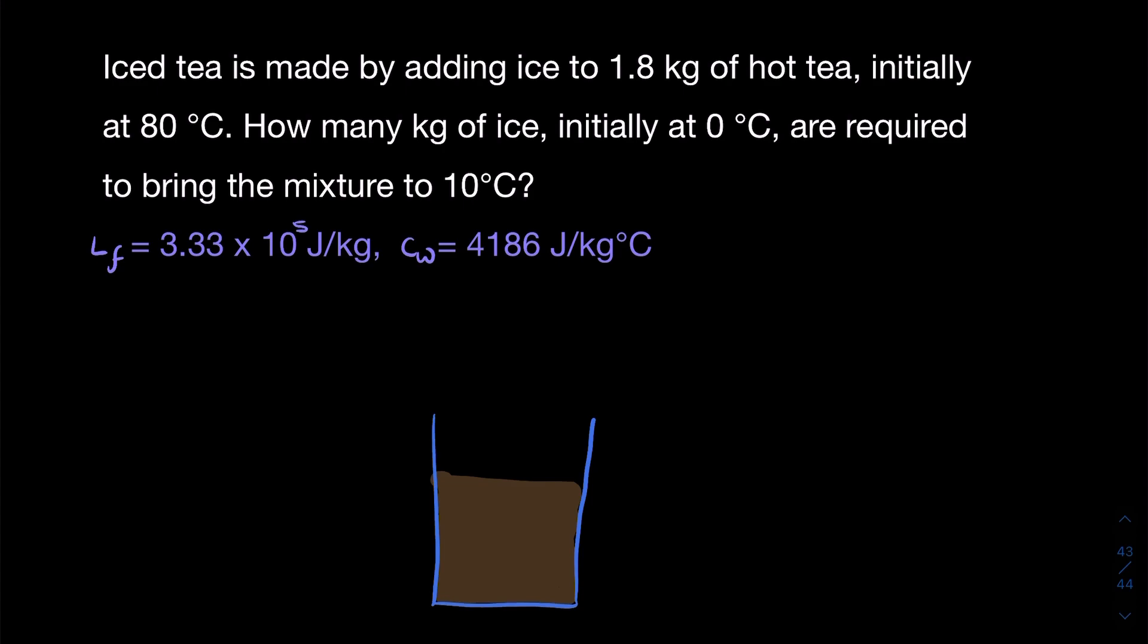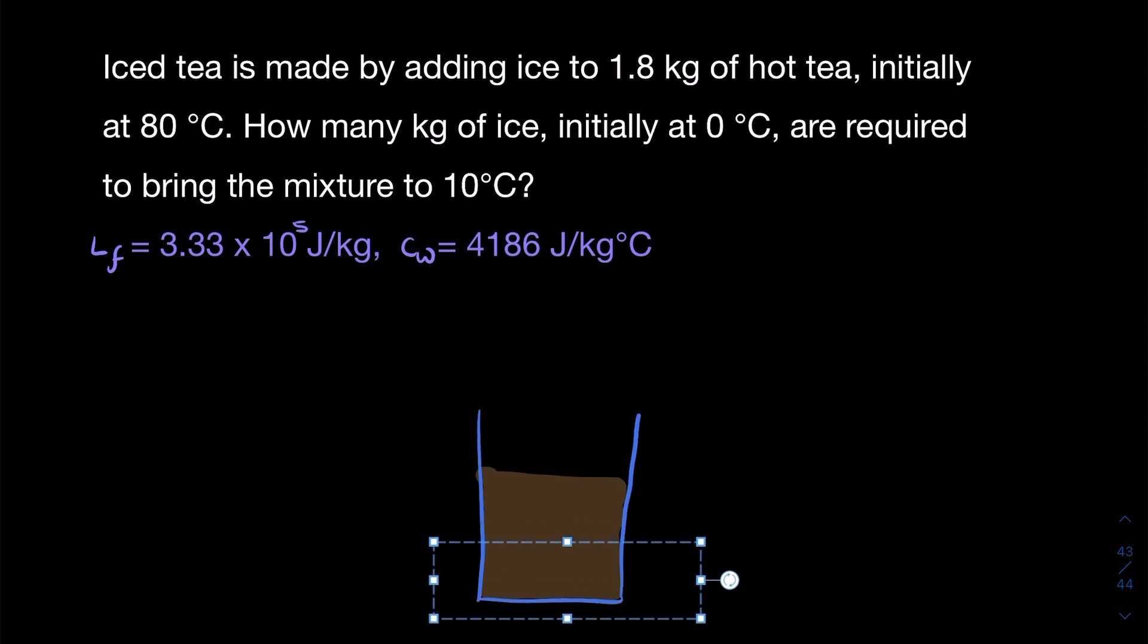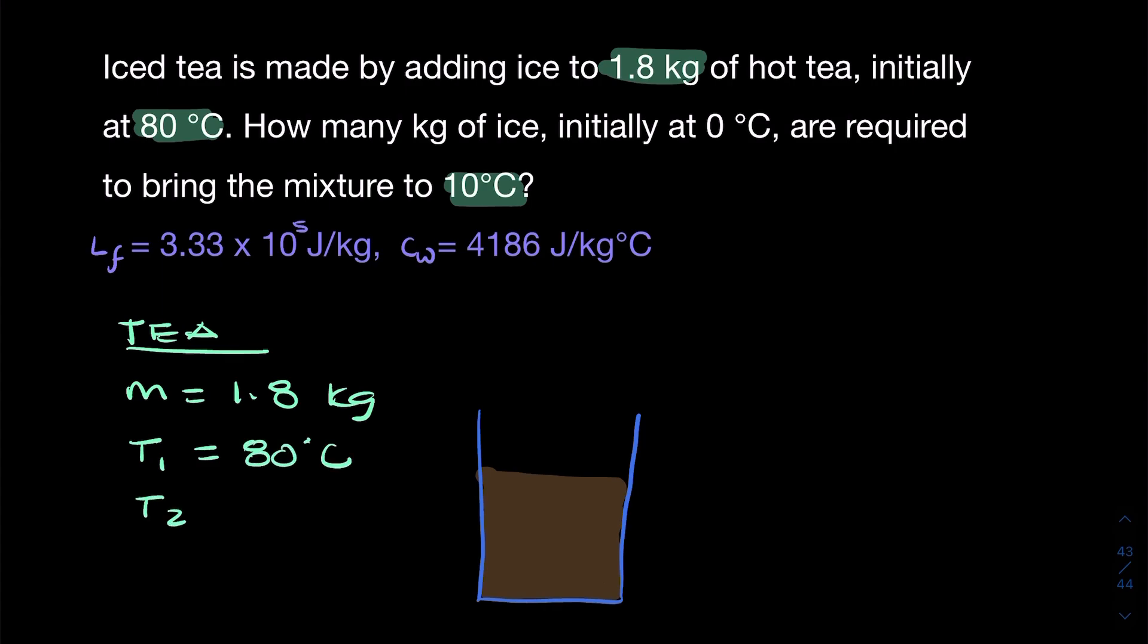We need to be really disciplined about all the material that we write down. So let's write down all the information we know about the tea. The tea has mass 1.8 kilograms, and it's initially at 80 degrees and ends up at 10 degrees. The initial temperature is 80 degrees Celsius, the final temperature is 10 degrees Celsius, and therefore the change in temperature, which is the final temperature minus the initial temperature, is negative 70 degrees Celsius.